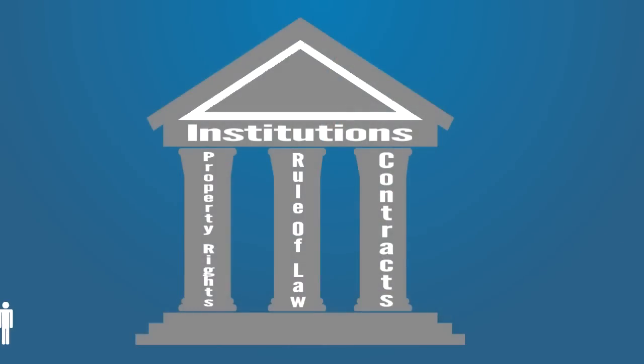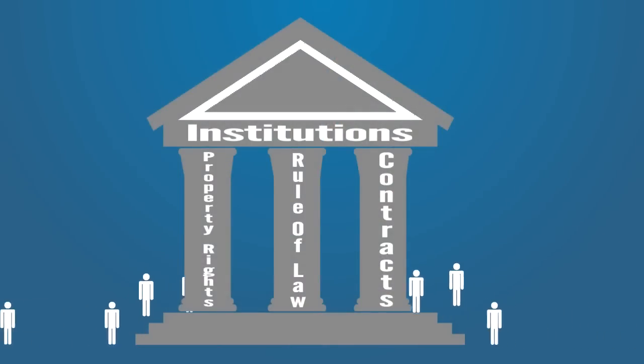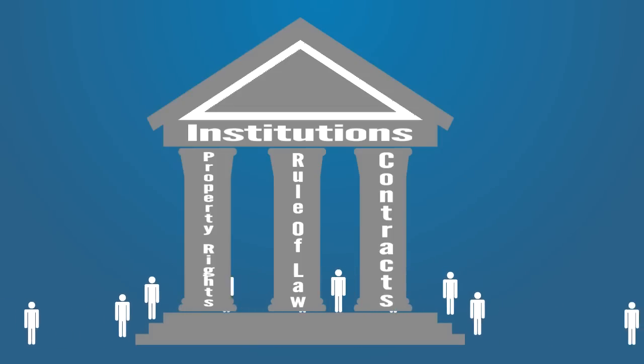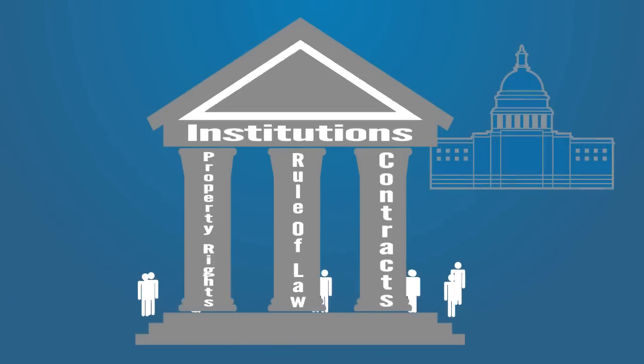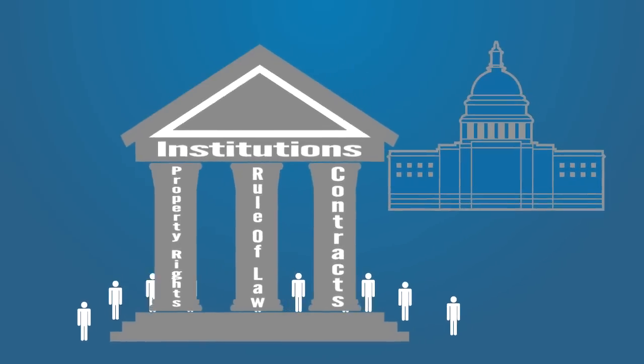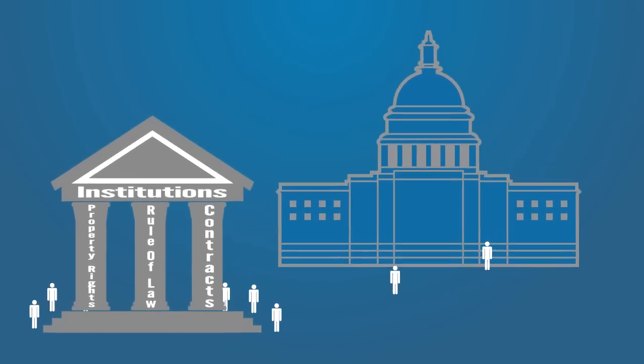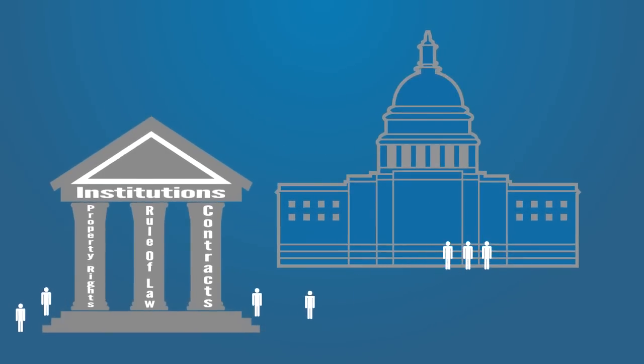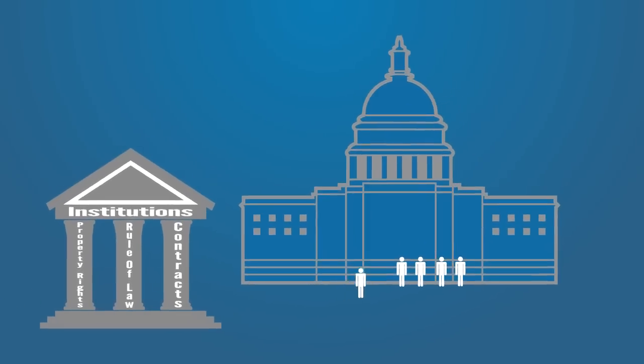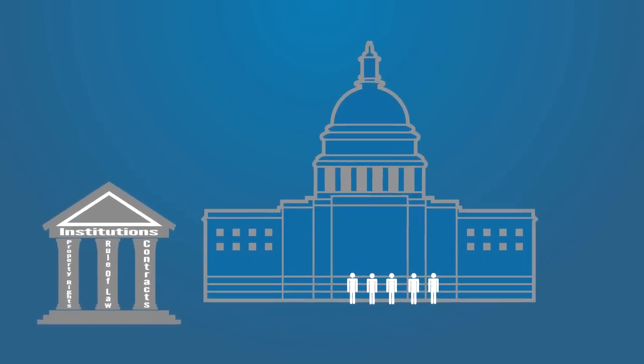So we see that institutions matter a great deal. A society's institutions determine whether or not people's attempts to improve their own lives will lead to good or bad consequences — whether they'll lead to prosperity or poverty. Across the globe, we see that good institutions like the protection of property rights, the rule of law, and the enforcement of contracts lead people to pursue avenues that create wealth and benefit their fellow citizens. Whereas the larger the role for government is, the less likely it is that people will engage in activity that benefits others. In fact, the larger the role of government, the more people get concerned about redistributing wealth rather than creating it.